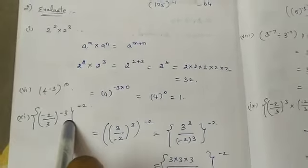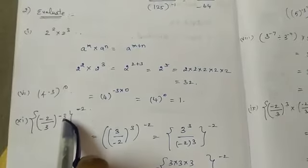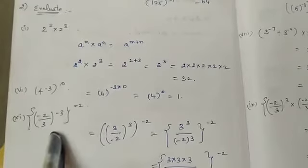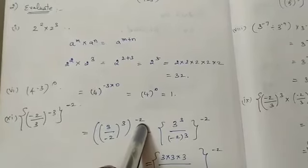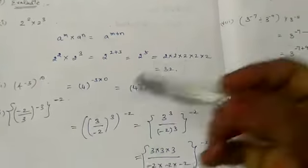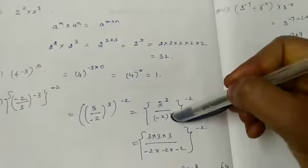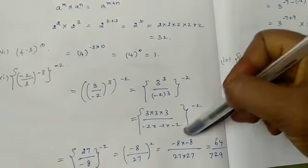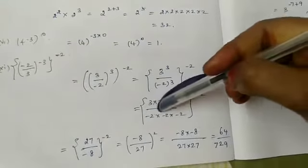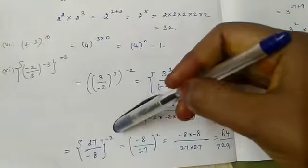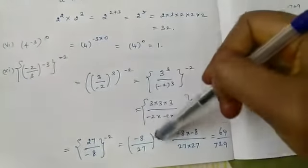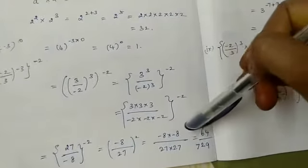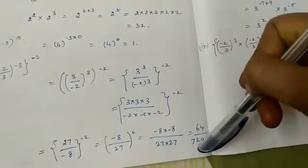Next: [(-2/3)^3]^(-2). First, the outer power is −2, so reciprocally change the base: (3/(−2))^3, then raise to power −2. Applying the power of 3 to numerator and denominator: 3³/(−2)³ = 27/(−8). Now raising to power −2: reciprocally change to get (−8/27)^2. So (−8)²=64 and 27²=729, giving the answer 64/729.